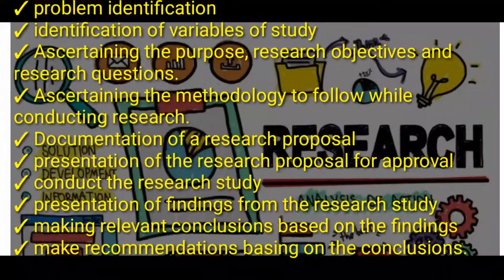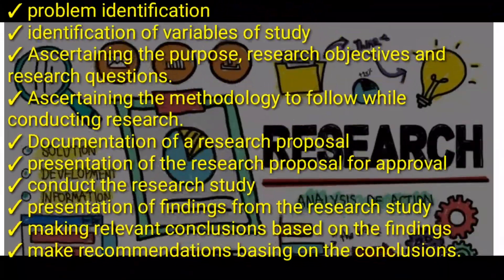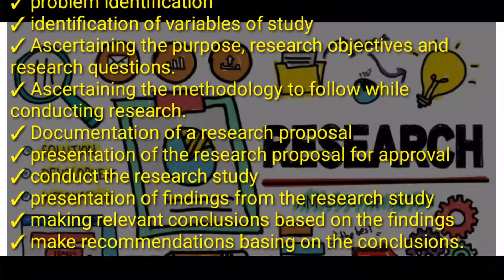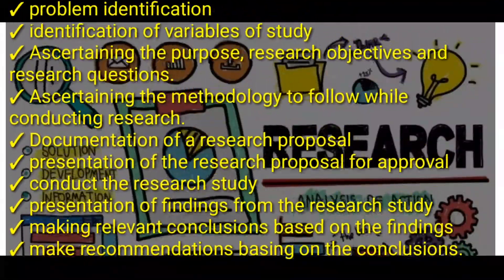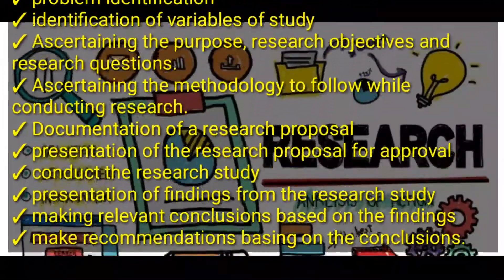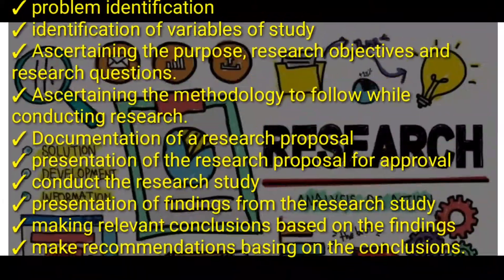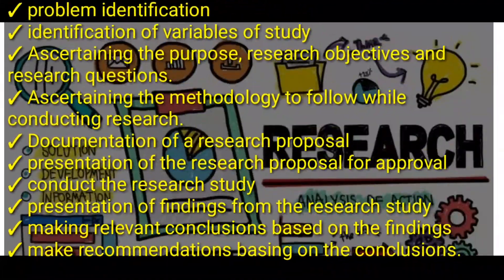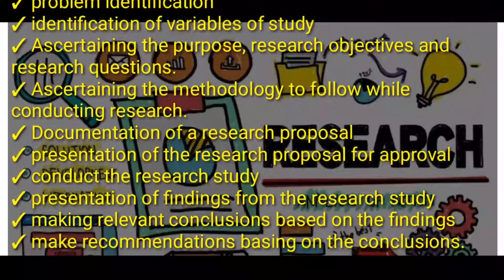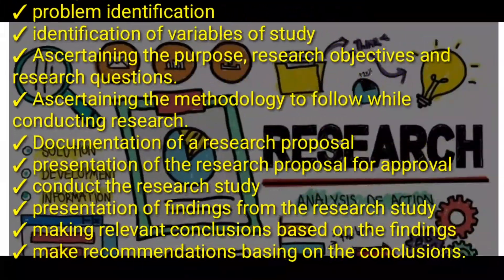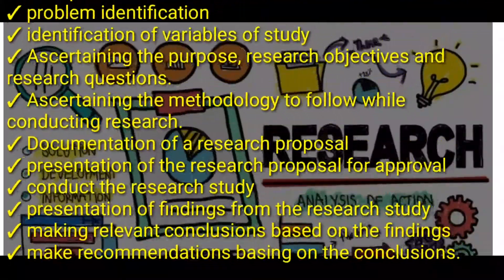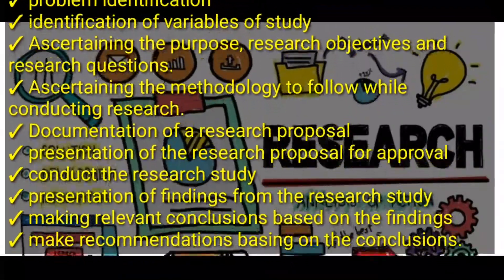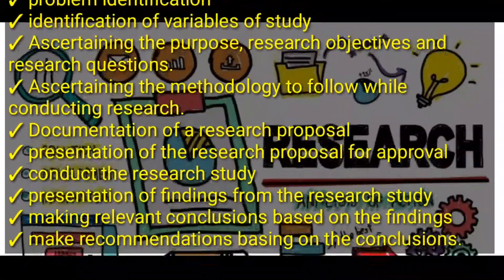To recap, the steps of the research process are: first, problem identification; second, identification of variables of study; third, ascertaining the purpose, research objectives, and research questions; fourth, ascertaining the methodology to follow; fifth, documentation of a research proposal; sixth, presentation of the research proposal for approval; seventh, conduct the research study; eighth, present the findings; ninth, make relevant conclusions based on the findings; and lastly, make recommendations based on the conclusions.